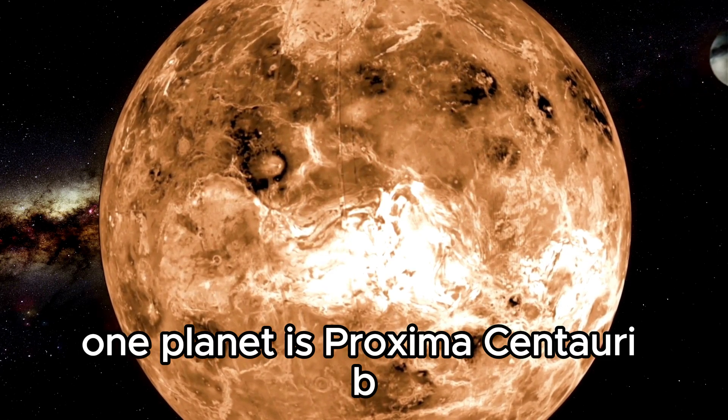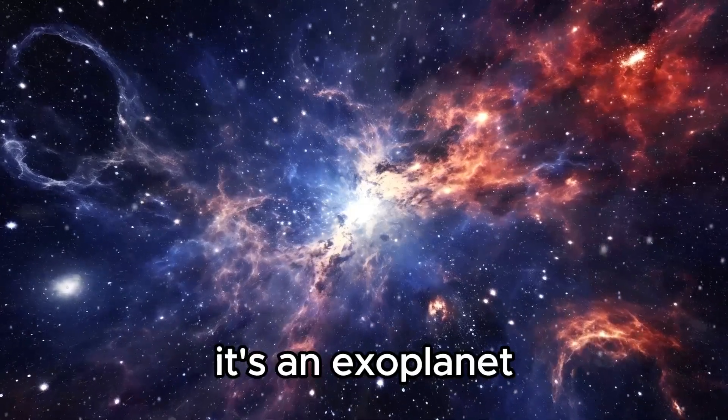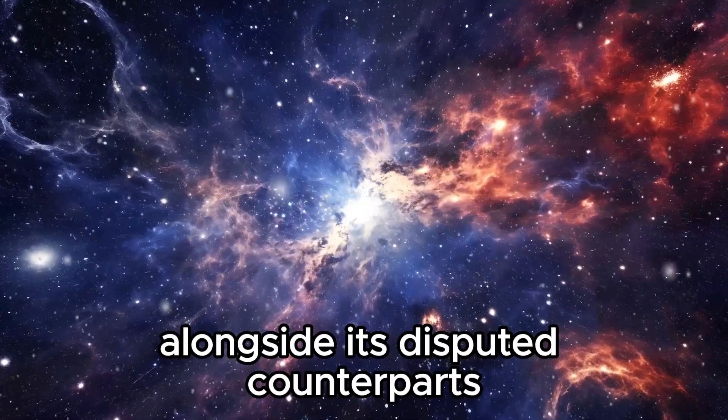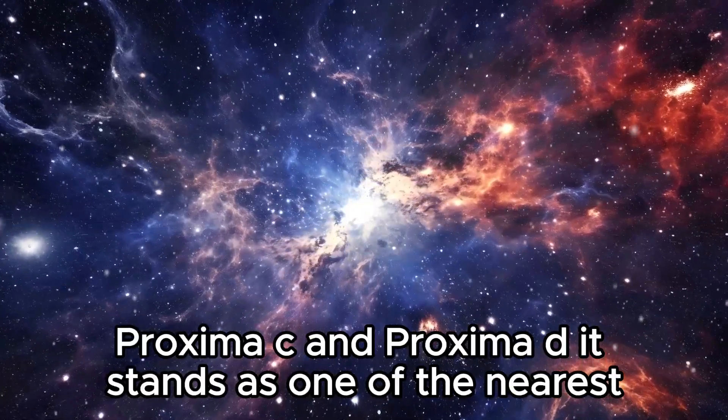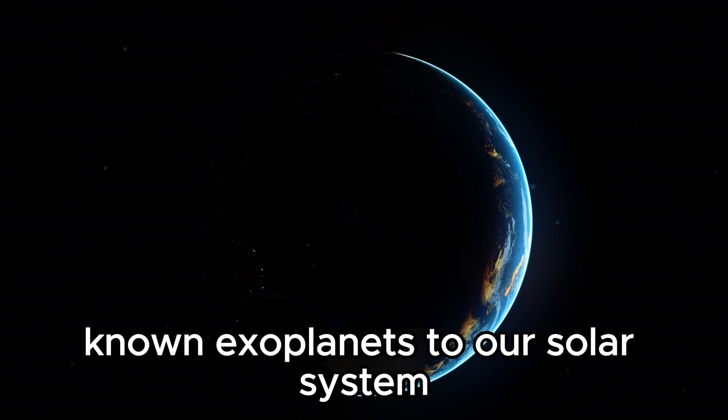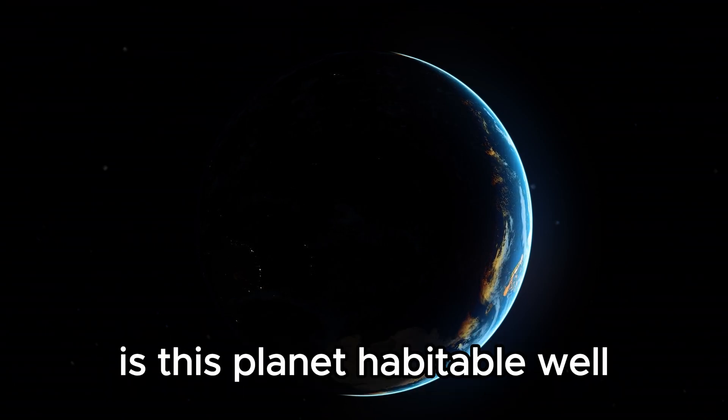One planet is Proxima Centauri B. It's an exoplanet residing within the habitable zone of the red dwarf, alongside its disputed counterparts Proxima C and Proxima D. It stands as one of the nearest known exoplanets to our solar system. Is this planet habitable?